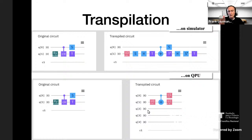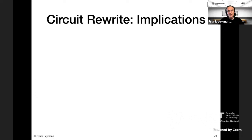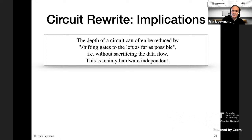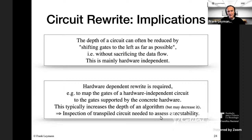Because circuits are rewritten during transpilation, the depth can often be reduced by shifting gates from right to left — this is mainly hardware-independent. Hardware-dependent rewriting is also required because if my circuit assumes certain gates, but the quantum computer implements different gates, I must map logical gates to subroutines of the physically implemented gates. This typically increases depth, as shown in the examples, meaning you need to inspect the transpiled circuit to assess whether it is executable on a given machine.